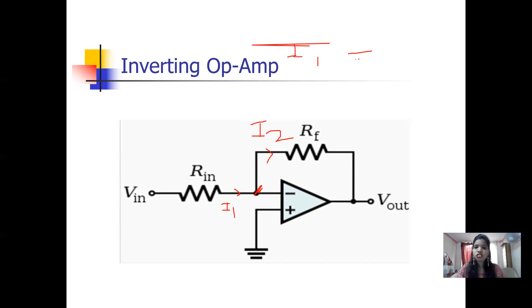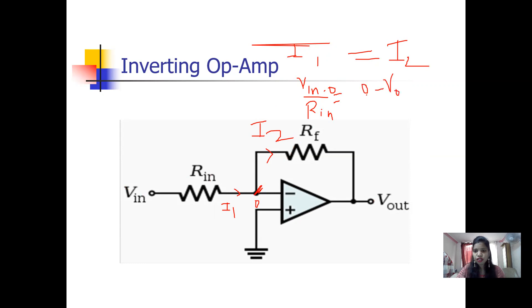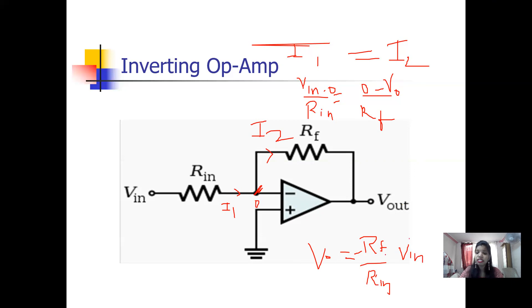Applying KCL at this node, current I1 equals current I2. Current I1 is V_in minus zero divided by R_in. Solving this equation gives the output as negative R_f divided by R_in, multiplied by V_in. If V_in is positive, you get a negative output.